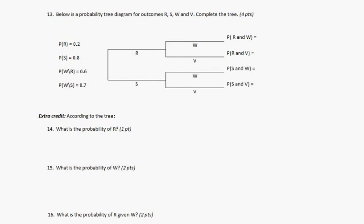So we have a probability tree here and it's generic. So we have these outcomes. The probability of R is 0.2. The probability of S is 0.8. So we're supposed to complete the tree.